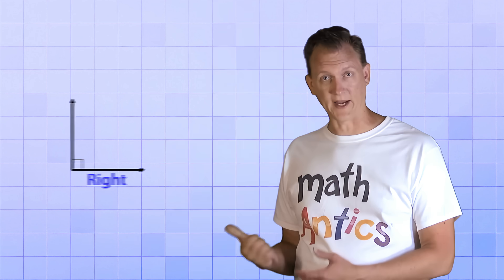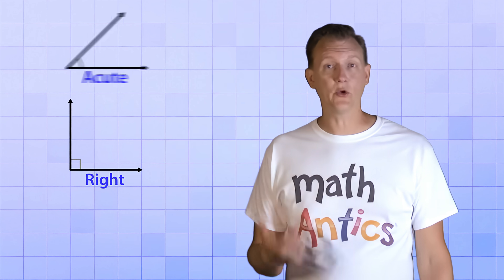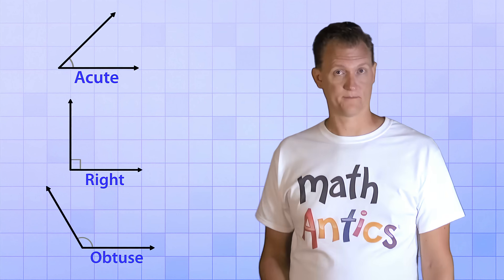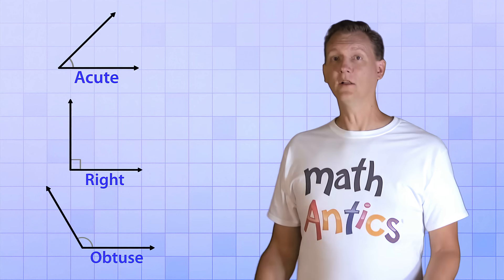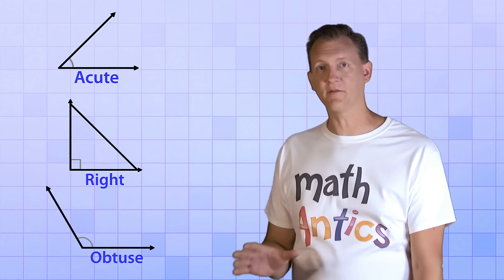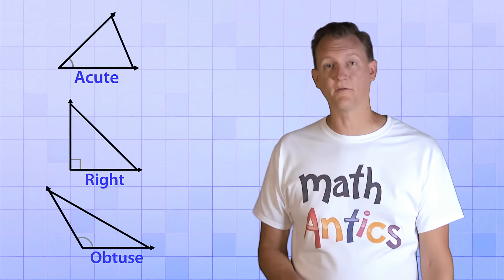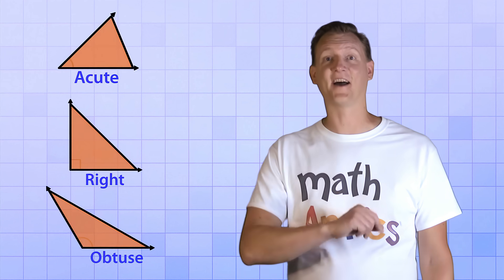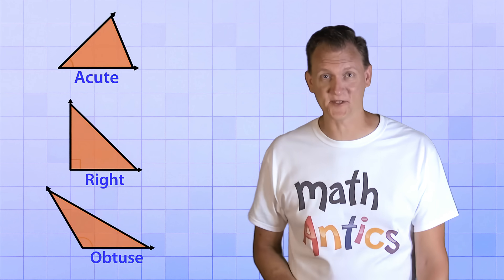You may remember from our first video about angles that there are three types of angles: right angles, acute angles, and obtuse angles. Watch what happens if we use a third line in each of these angles to form closed shapes. Triangles!